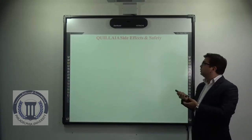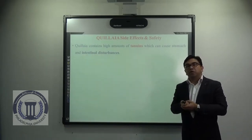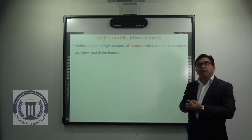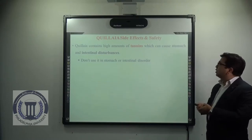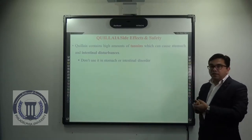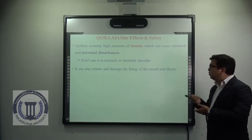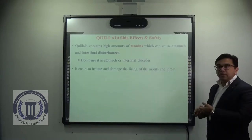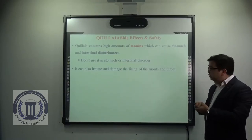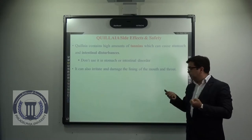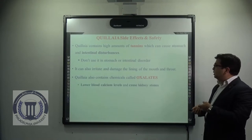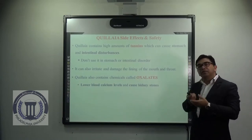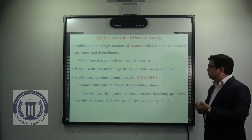Coming to Quillaja side effects and safety. Quillaja contains a high amount of tannins, which can cause stomach and intestinal disturbances. So it is advised not to use the Quillaja extract in stomach or intestinal disorders. It can also irritate and damage the lining of the mouth and throat because of the presence of tannins, which can precipitate protein. Quillaja also contains chemicals known as oxalates, which can lower blood calcium levels and can also cause kidney stones. Quillaja can also cause diarrhea, serious breathing problems, convulsions, coma, red blood cell destruction, and liver and kidney failure if consumed in inappropriate quantities.